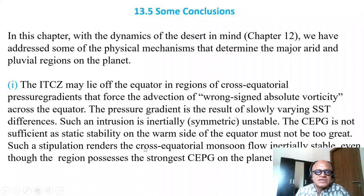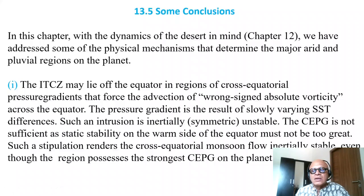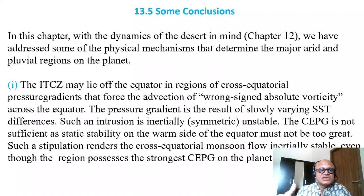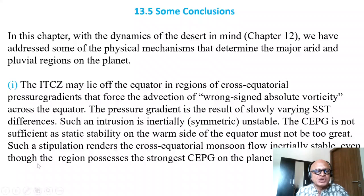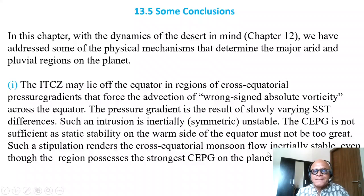The cross-equatorial pressure gradient (CEPG) is not sufficient, since static stability on the warm side of the equator must not be too great. If the advection of vorticity happens, then inertial instability has to kick off convection. Such a stipulation renders the cross-equatorial monsoon flow inertially stable, even though the region possesses the strongest CEPG on the planet in the Western Indian Ocean.